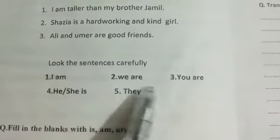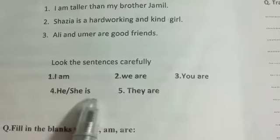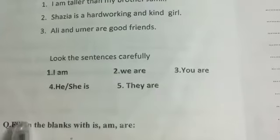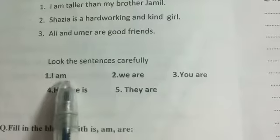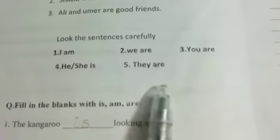Look at this sentence carefully. اگر آپ sentence کو carefully دیکھیں تو: I am, we are, you are, he/she is, they are. ان سے ہمیں پتہ چل رہا ہے کہ I کے ساتھ ہم am use کرتے ہیں، we کے ساتھ ہمیشہ are، you کے ساتھ are، he/she کے ساتھ is، اور they کے ساتھ are use کرتے ہیں۔